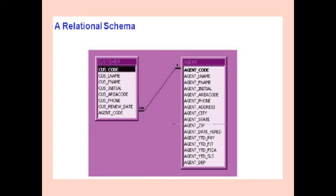Columns in a table are also called attributes. The column is the vertical part of the relation. Next is rows — the horizontal part of the relation. One row represents one record of the relation. The rows of the relation are also called tuples. Next is degree — the number of attributes, meaning the number of columns in a relation, is called the degree of the relation. If the table has five columns, the relation is said to have a degree of five.